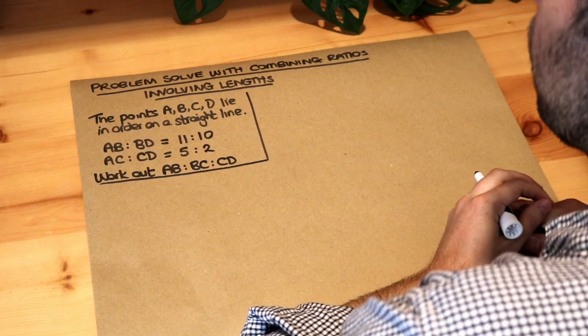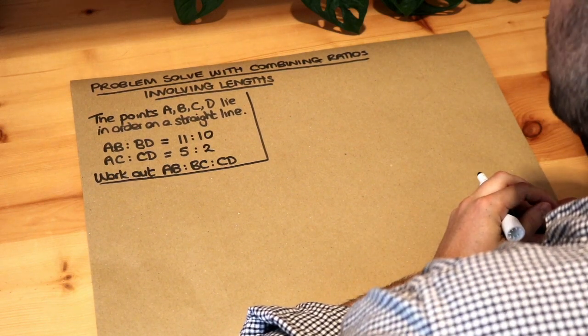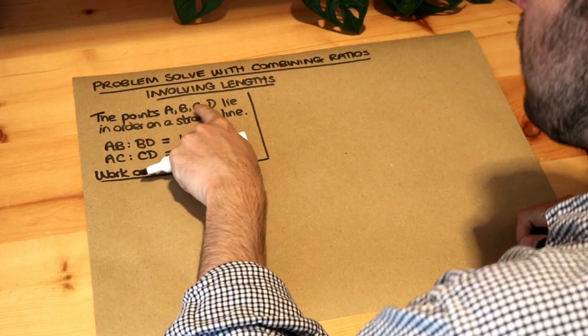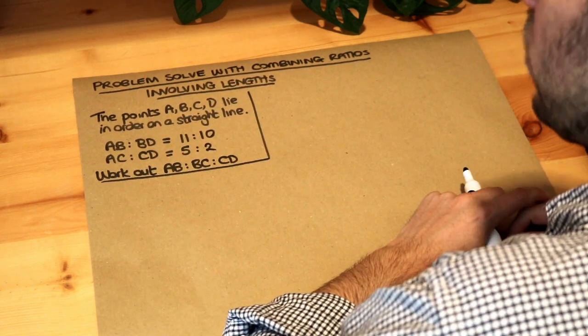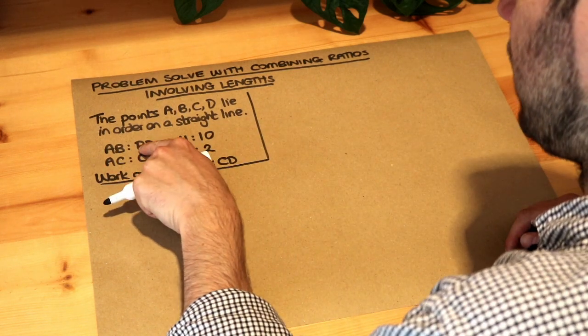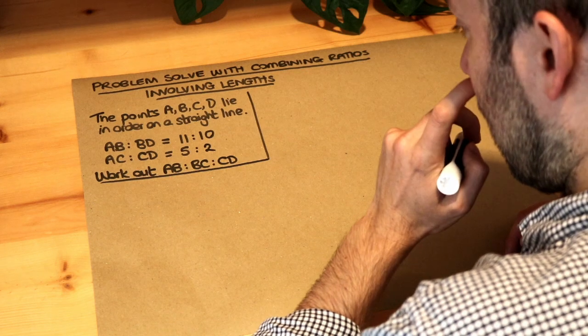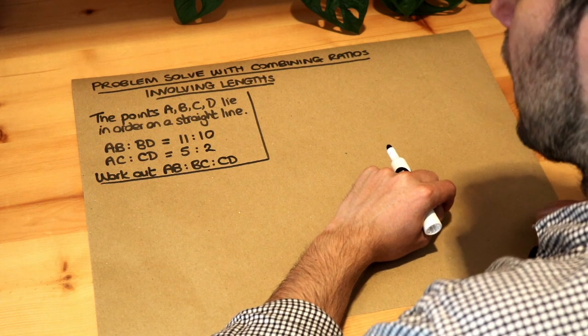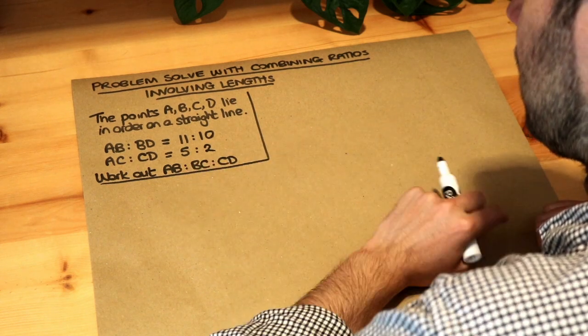Hello and welcome to this Dr. Frost video on problem solving with combining ratios involving lengths. Let's read the question. The points A, B, C, and D lie in order on a straight line. The ratio of the length of AB to BD is 11 to 10, and the ratio of the length of AC to CD is 5 to 2. We want to work out the ratio of AB to BC to CD.